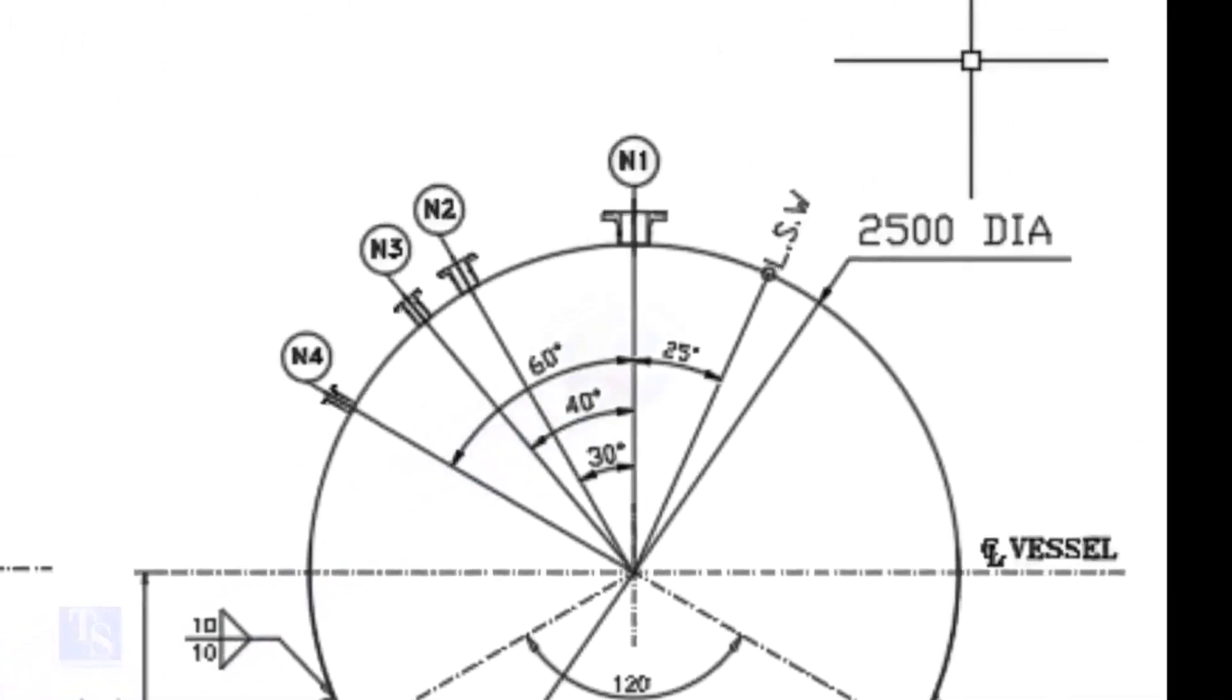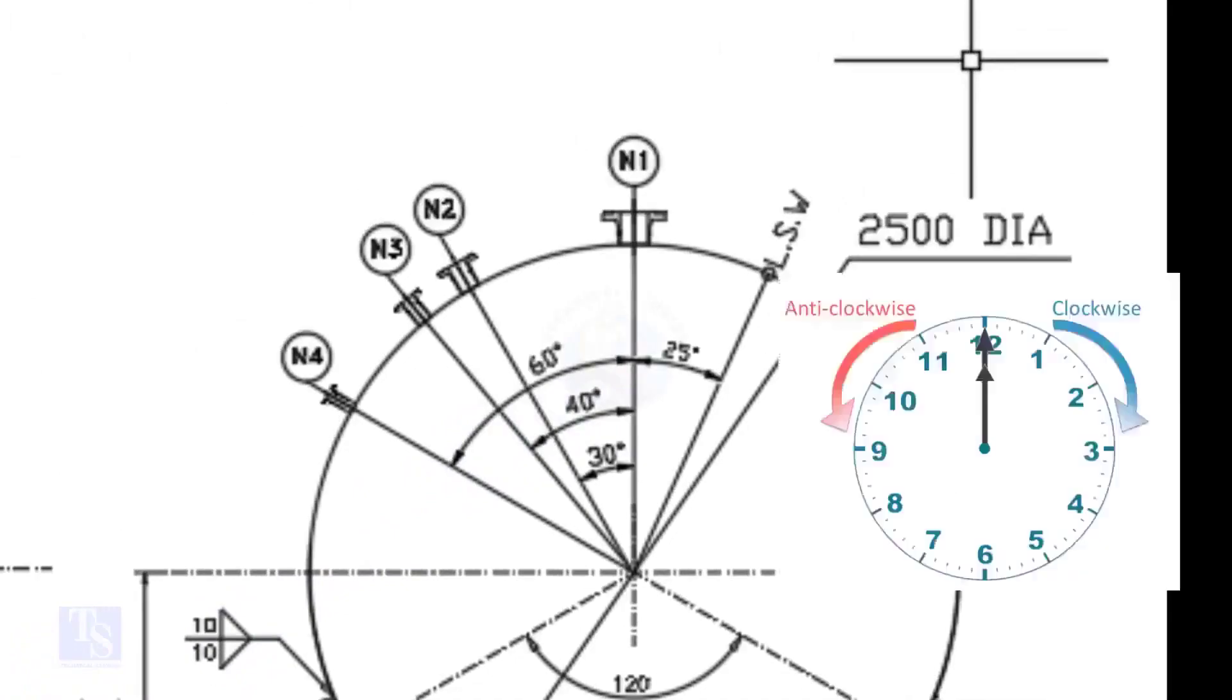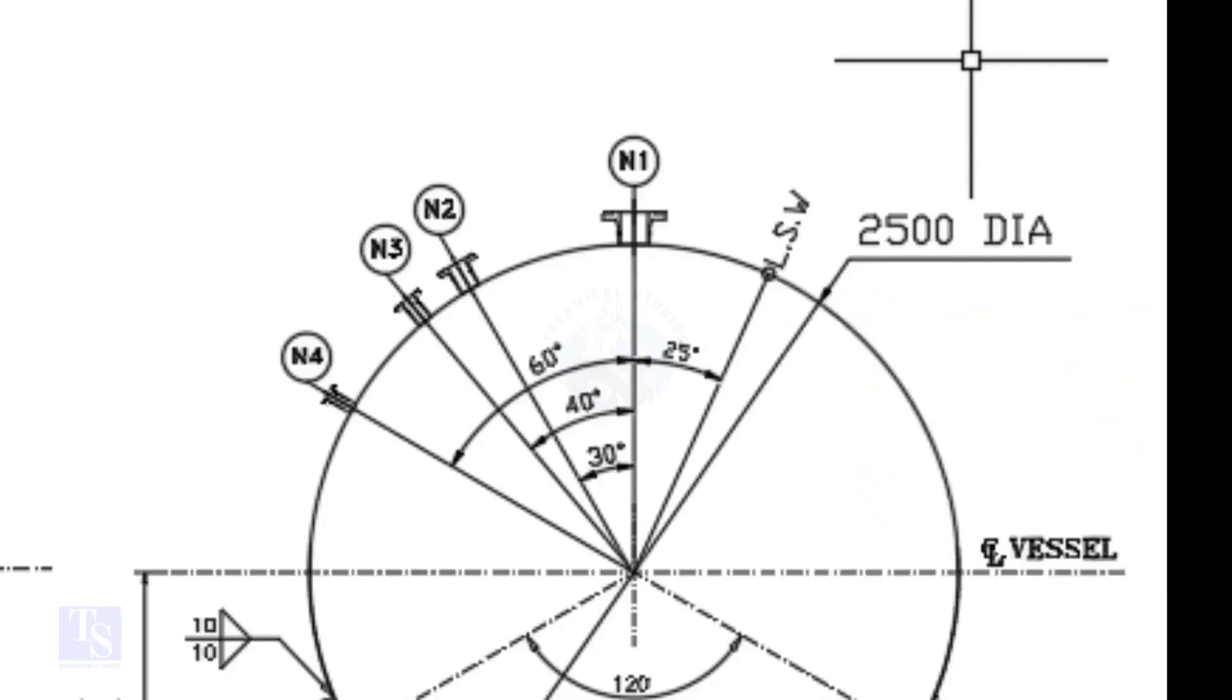Look at the nozzle orientation. The nozzle orientation is in anti-clockwise direction. We are going to mark the centers of nozzles N1, N2, N3, and N4. N1 nozzle comes on 0 degree, N2 on 30 degree, N3 on 40 degree, and N4 on 60 degree.